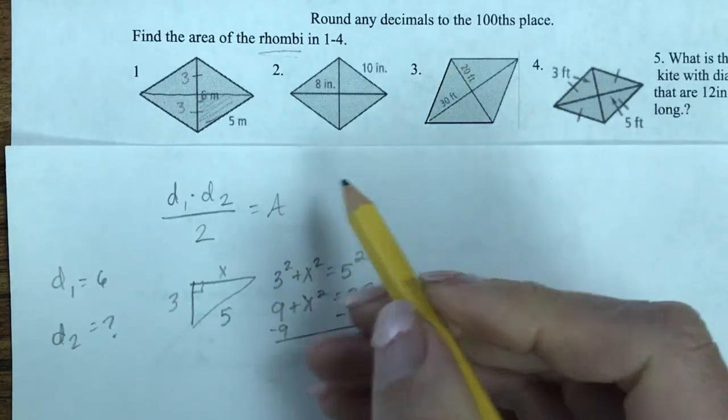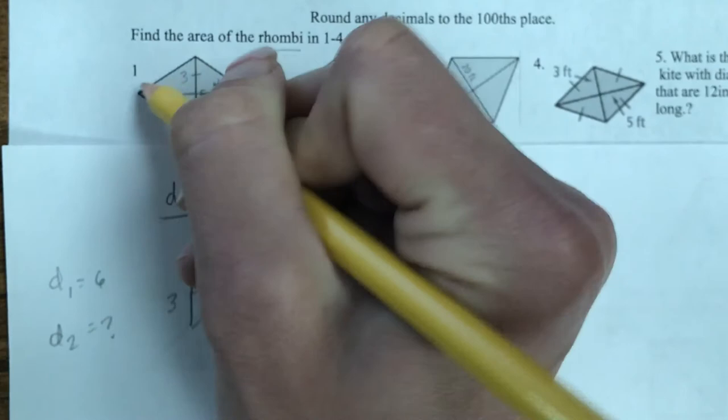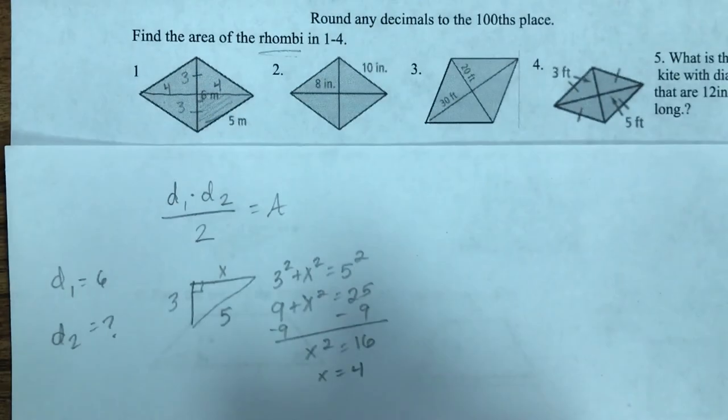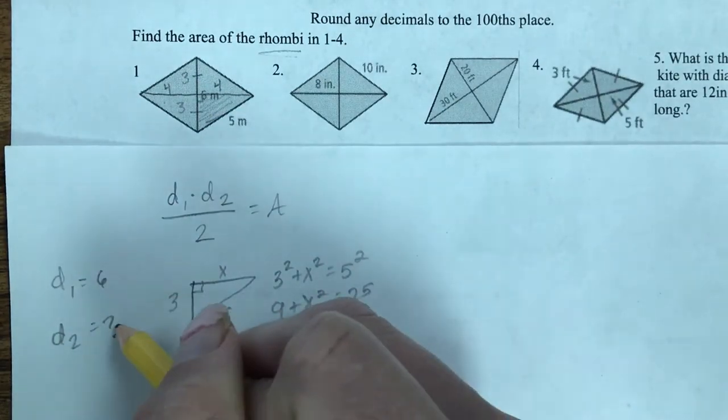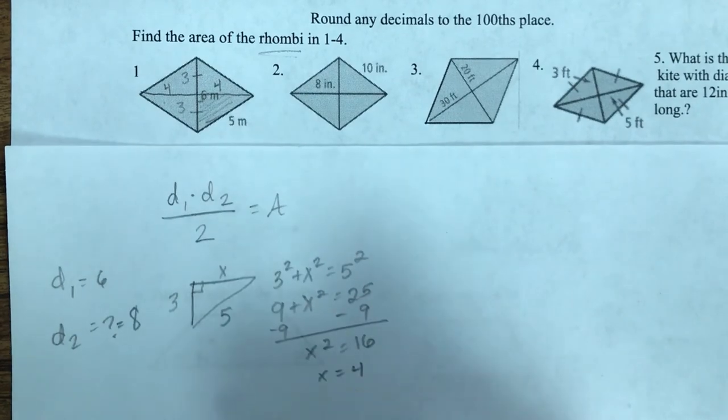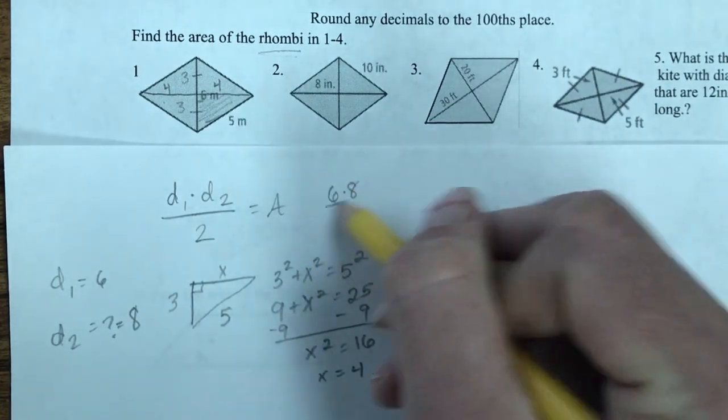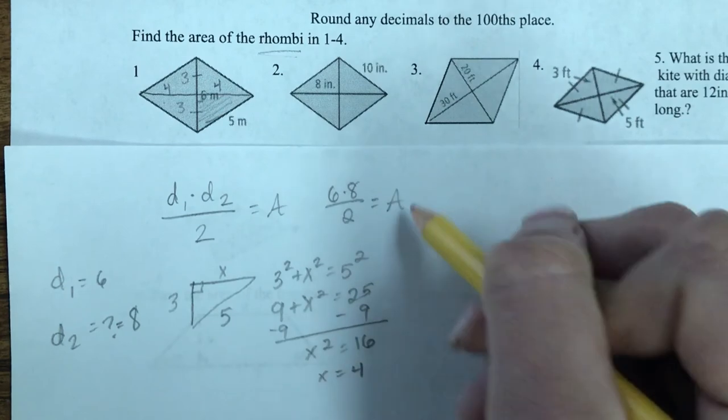So if that's the case, then this length is 4 right here, and this length over here is 4, since my diagonals bisect each other. And diagonal 2 is actually 8. So using this formula, I can say 6 times 8 divided by 2 is going to give me my area. I would just reduce the 8 and the 2, so I would just get 24.